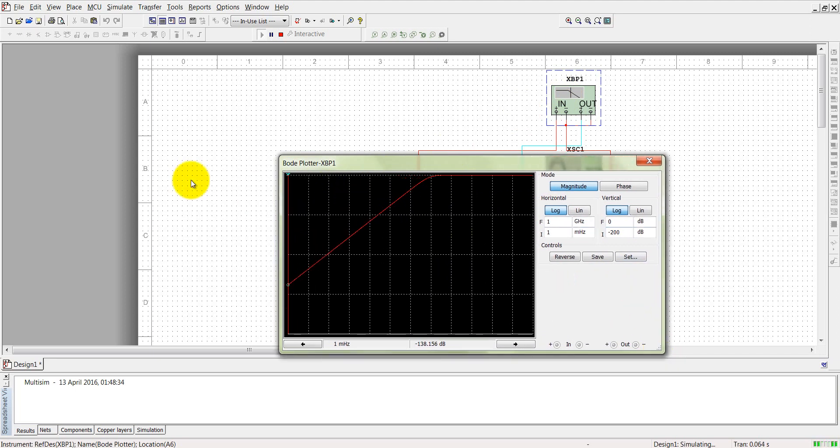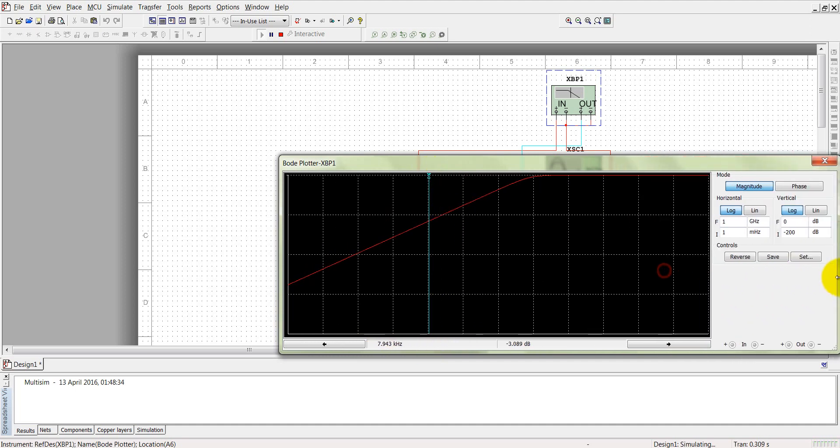See, minus 3 dB frequency must be at 8 kilohertz. Let's see 8 kilohertz minus 3 dB. Where is minus 3 dB? See, it is almost 8 kilohertz. Let me set it very precisely. I am sorry I am unable to set it, but you can assume at minus 3 dB frequency there is a 8 kilohertz cutoff.